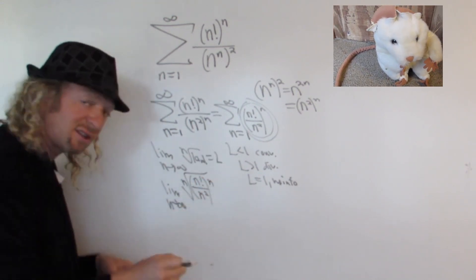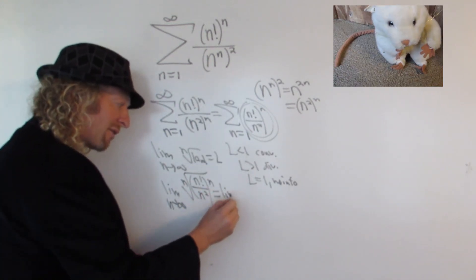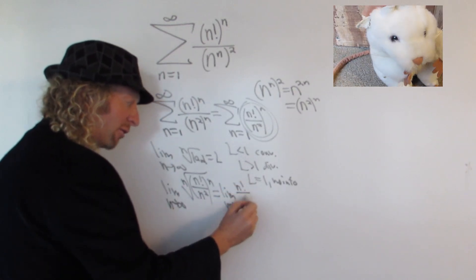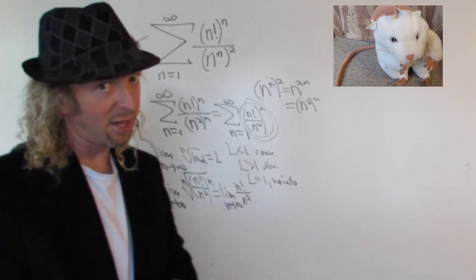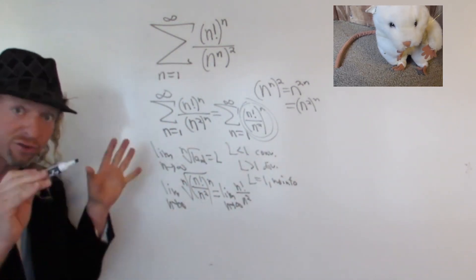Well, the nth root of anything to the nth power, it goes away, right? That was the whole point of writing everything to the nth power. So we have the limit as n approaches infinity of n factorial over n squared.